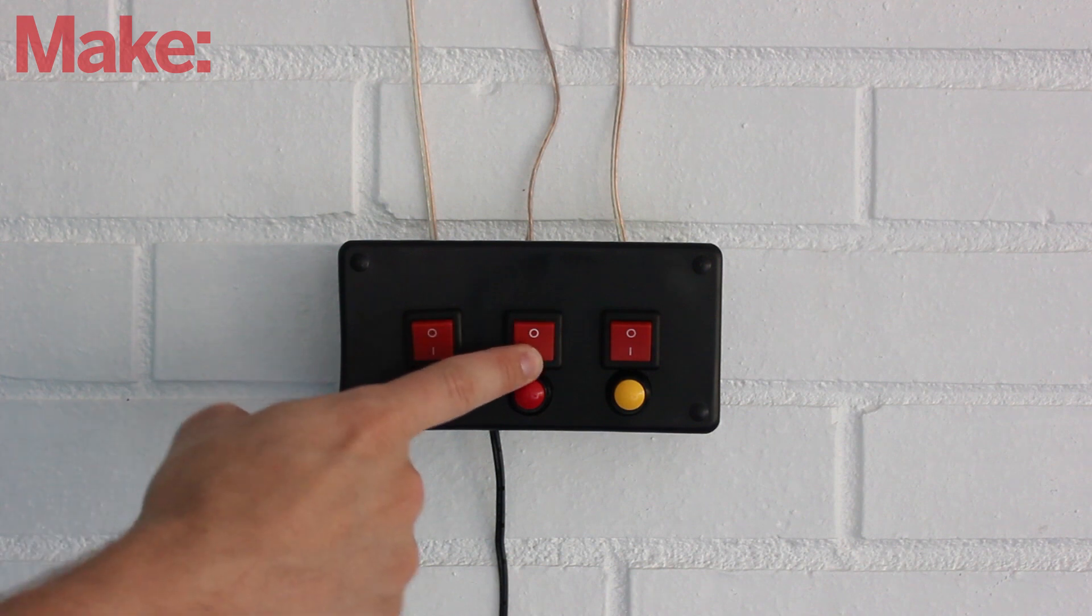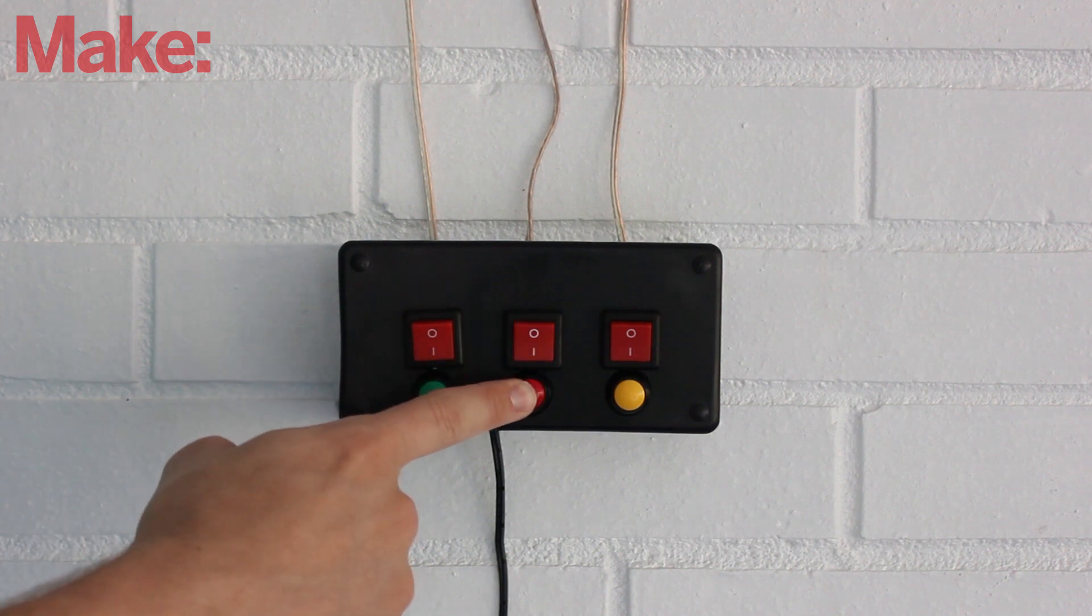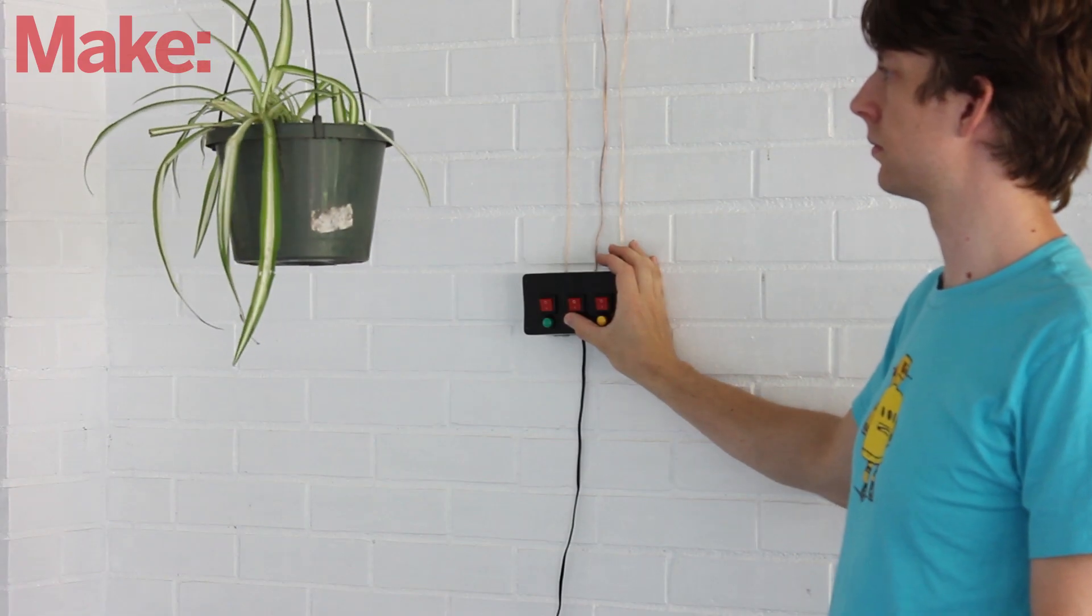To lower the plant, press the down button, then press the momentary switch. Your plant will lower until it's at a good working height.